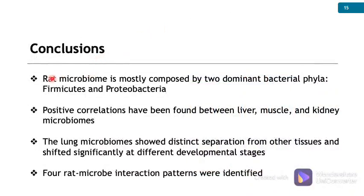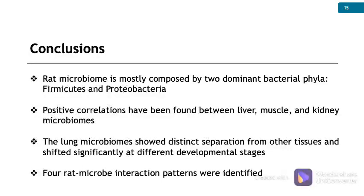Our conclusions: the rat microbiome is mostly composed of two dominant bacterial phyla, Firmicutes and Proteobacteria. We can see positive correlations between liver, muscle, and kidney microbiomes. The lung microbiome showed a distinct separation from other tissues and shifted significantly at different developmental stages. Finally, we identified four rat microbiome interaction patterns.